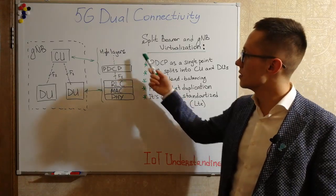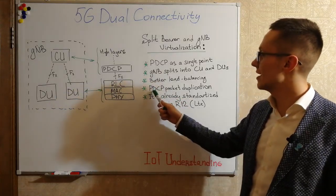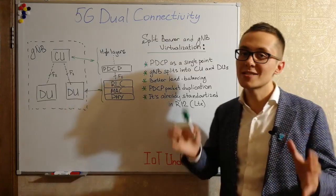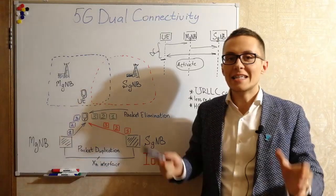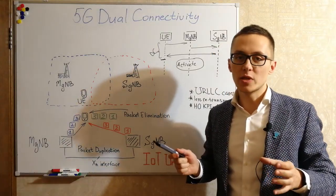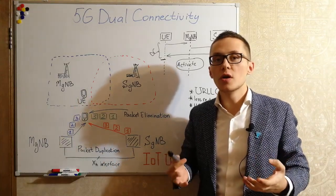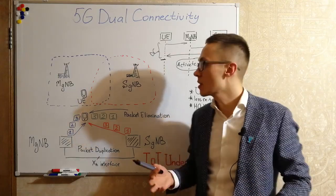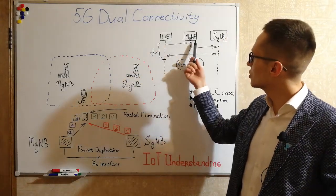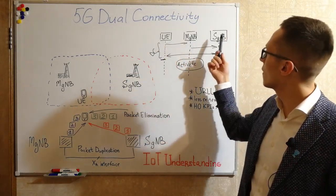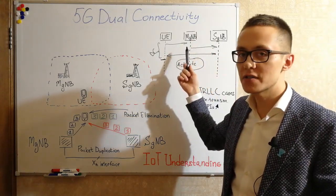And it goes hand in hand with the technology of PDCP packet duplication. PDCP packet duplication is a simple solution to meet strong URLLC requirements. It basically happens after establishing a connection with the master gNodeB, after adding a secondary gNodeB, and after reconfiguring the RRC connection.